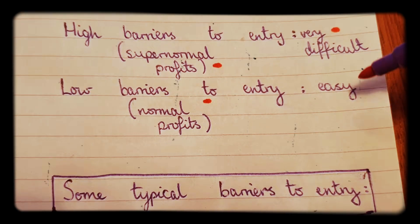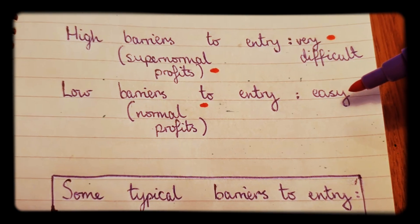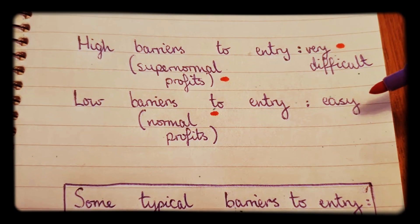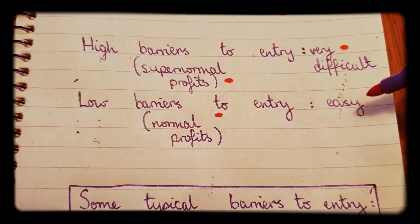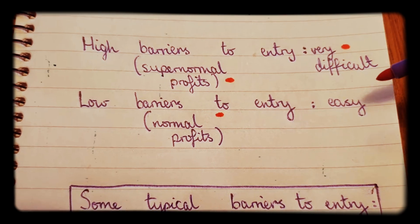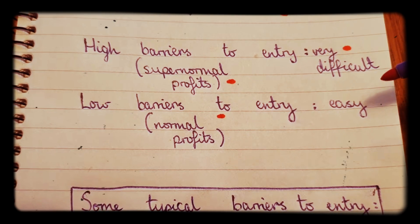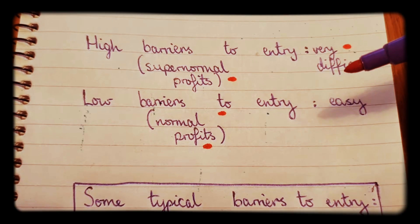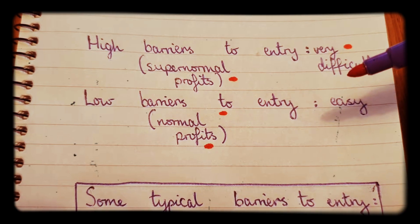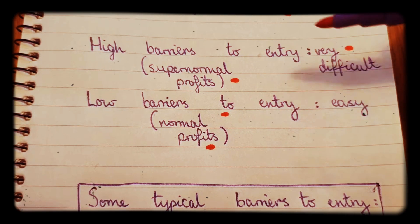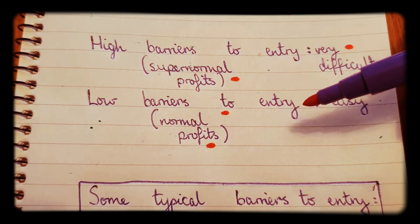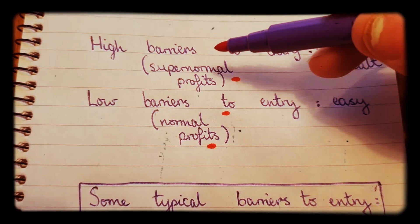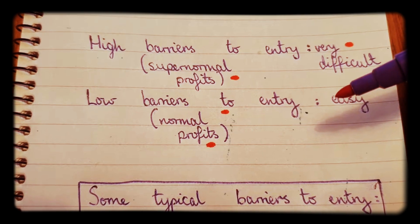With low barriers to entry, we have a very easy life for people who want to join the market. As a result, the firms within the market are able to make normal profits, or very close to normal profits, but certainly not the huge supernormal profits that come with a market with high barriers to entry.